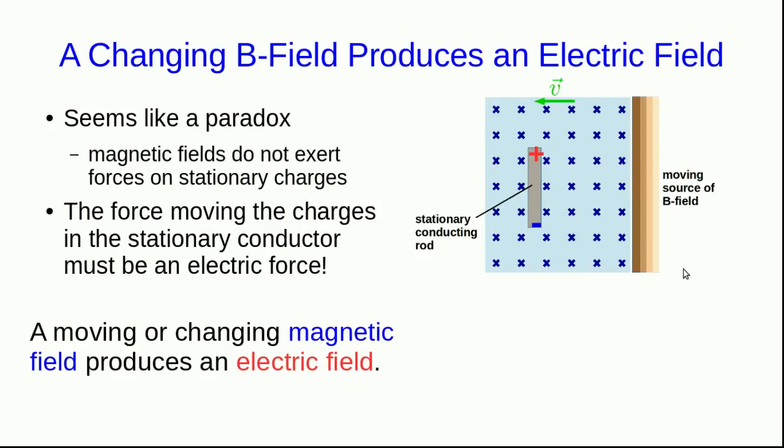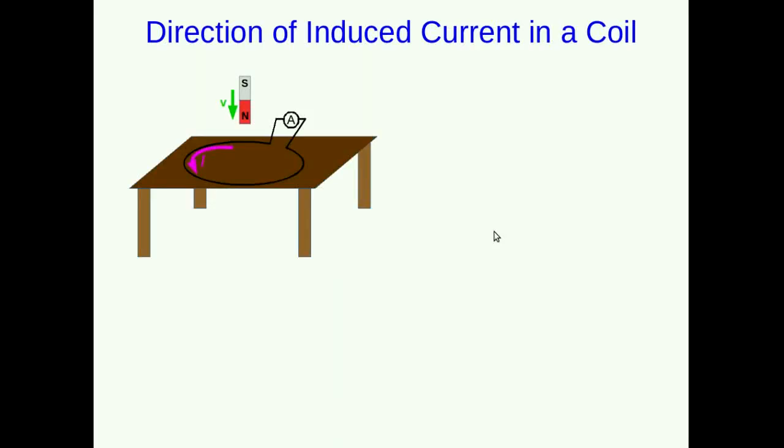And so we need to conclude that a moving or changing magnetic field produces an electric field. This will eventually give us a way of explaining the currents that we see in conducting coils and loops in changing magnetic fields. So I promised that we would explain the directions of the induced currents in a coil when you're inserting or removing a magnet. So now it's time to do that.